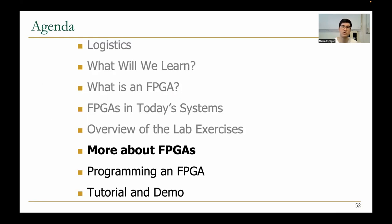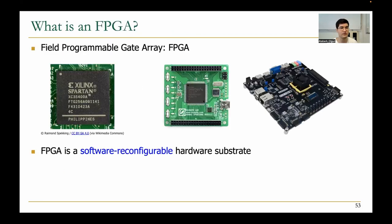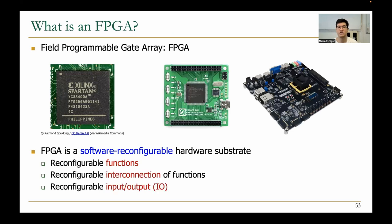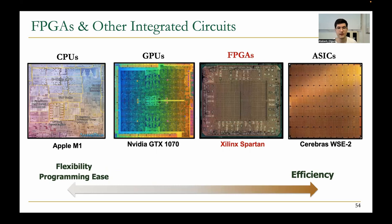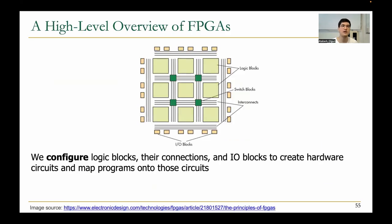So we'll talk more about FPGAs. Recall that an FPGA is a reconfigurable substrate — it implements reconfigurable functions, interconnection of functions, and inputs and outputs. Here's a high-level overview of an FPGA. It consists of many components: logic blocks, switch blocks, interconnects, and IO blocks. All of these are configurable, and that's what essentially enables flexibility in designs.